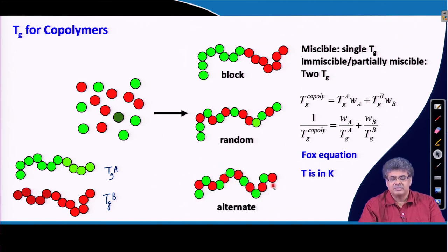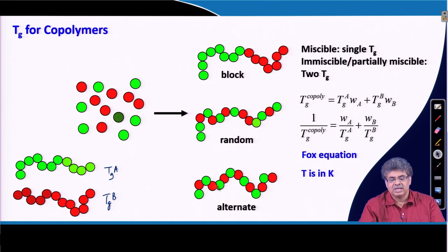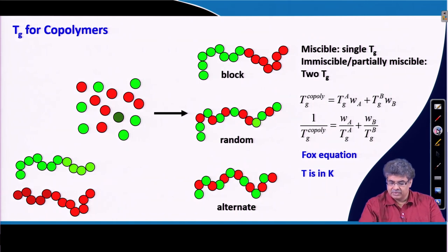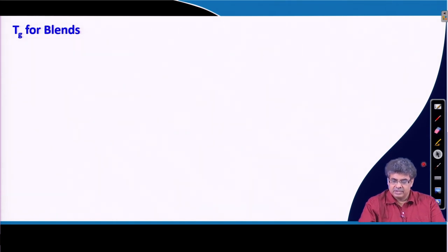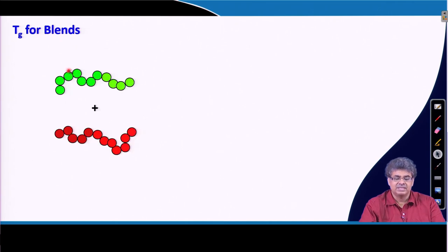If we have an alternating copolymer, then obviously it is a 1:1 copolymer by mole. So, from the knowledge of the molar mass of the monomers, we need to find out what the weight fraction of corresponding monomers would be, and we can use this expression to find the Tg of the copolymer. Similarly, we can also use this expression to find Tg for polymer blends, which are basically mixtures of one or more polymers.